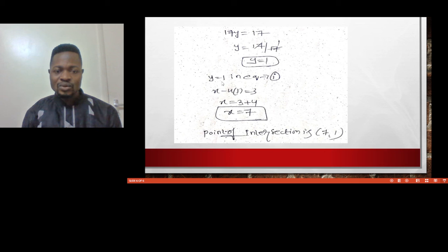Y equals 1 in equation 1, so X minus 4 times 1 equals 3, which gives us X equals 7. The point of intersection is (7, 1), and this is the coordinate of C. This is how we deal with equation of the line, the gradient, and locating a point of intersection.